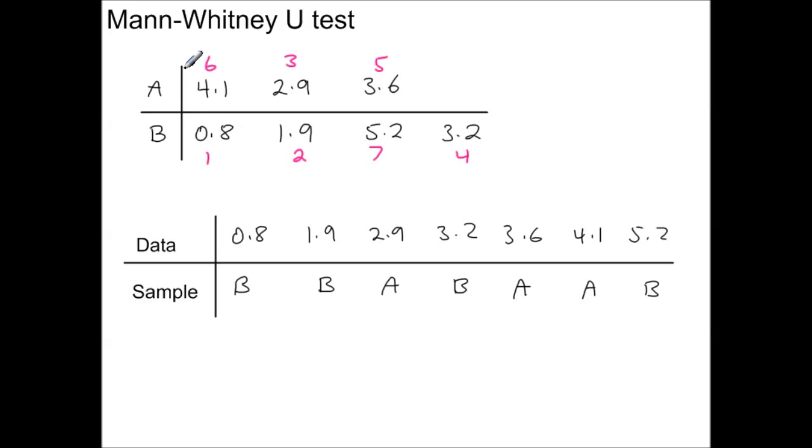For this table I've worked out the ranks for the data values, rank 1 for the smallest, and now I'm going to work out the total for the ranks. So these ranks add up to 14, and the ranks here for sample B add up to 14. Now we can do the same with this format for the data, again giving rank 1 for the smallest data value, so that's 1, 2, 3, 4, 5, 6, 7, and having the data in numerical order made the rankings easier.